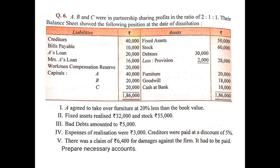Then furniture will be transferred on the debit side: to furniture 20,000 of the realization account. Then goodwill given in the balance sheet at the time of dissolution need not be written off — it is treated just like other assets and transferred on the debit side of the realization account: to goodwill 18,000.